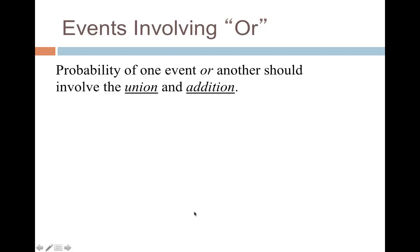All right, let's look at the OR events. Whenever we have OR, O-R, one event or another, that's going to be union, combining two things. So in math, that means addition. We combine two things together, we're going to be adding them.